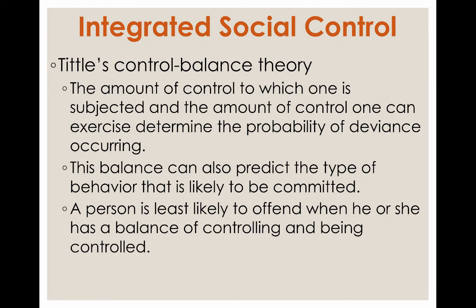Tittle's control balance theory argues that the amount of control to which one is subjected and the amount of control one can exercise determines the probability of deviance. The balance between these two types of control can even predict the type of behavior likely to be committed. A person is least likely to offend when they have a balance of controlling and being controlled. If people are more controlled, he calls this a control deficit; if people have less control imposed on them, it's a control surplus. If the balance shifts in either direction, that person is more likely to engage in criminality.